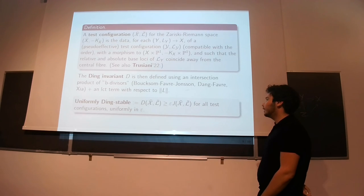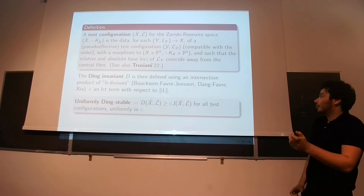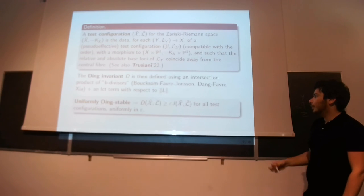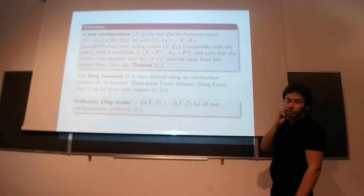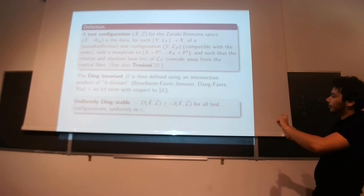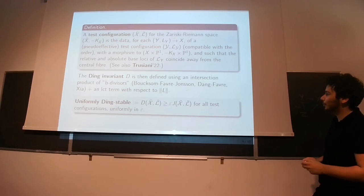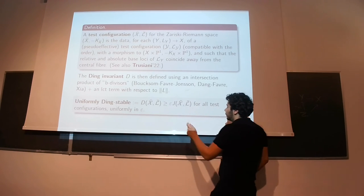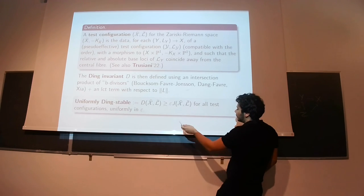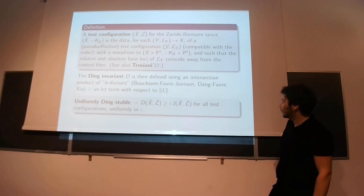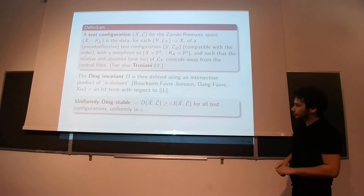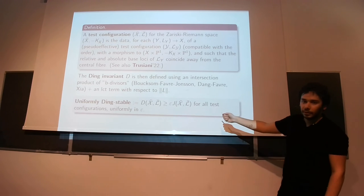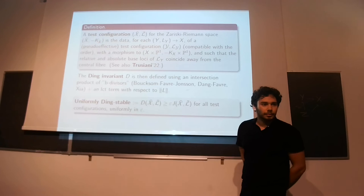So here I mentioned the work with Trujani. So very briefly, Trujani works in the Fano case, but with prescribed singularities. So he fixes a singular positive metric on minus KX, and he asks for Kähler metrics in a weak sense that have the same singularities. And in doing that, he also basically comes up with the same definition of test configurations. His paper is not published yet. But still, we end up converging despite starting from different directions. So, as I said, I don't really define the Ding invariant, but it's basically, so there is one part, which is really the volume part, or an asymptotic volume part, which is defined using the theory of intersection of b-divisors. And then there's some local threshold term with respect to the base locus that I don't really want to define.